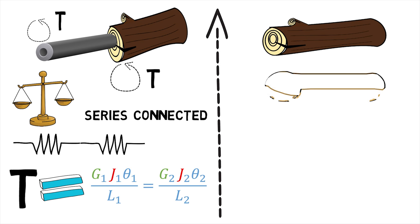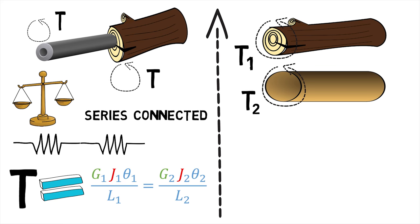If two or more shafts are regionally fixed together such that the applied torque is shared between them, then the composite shaft so formed is said to be connected in parallel.